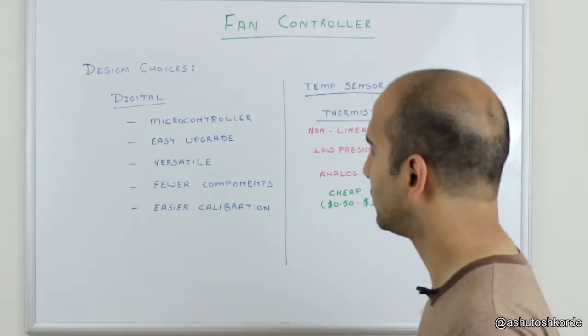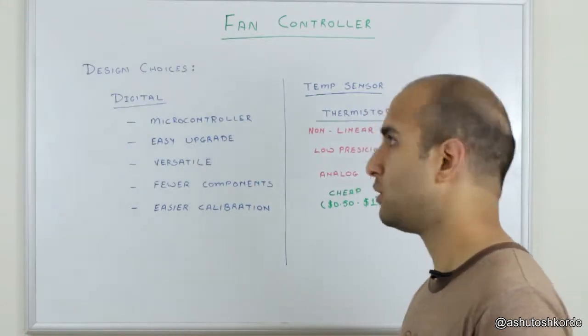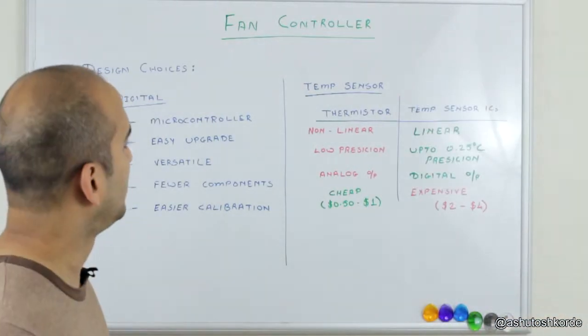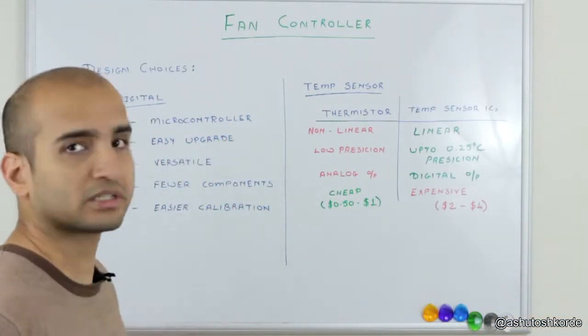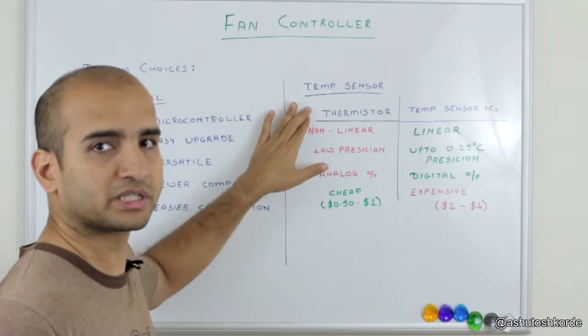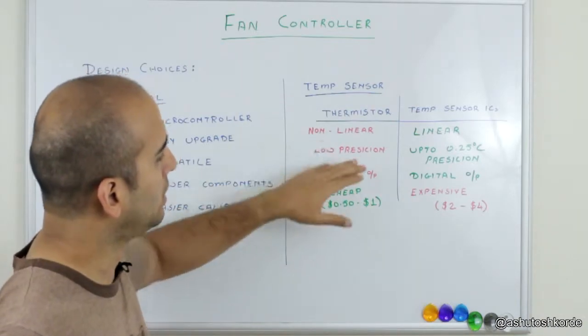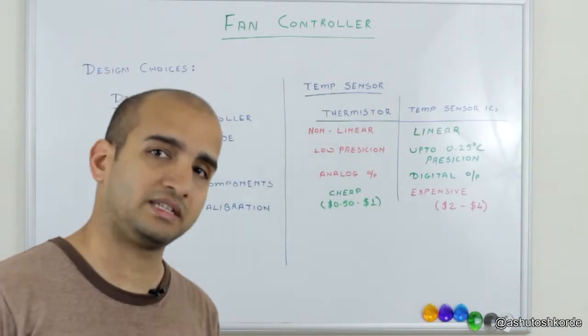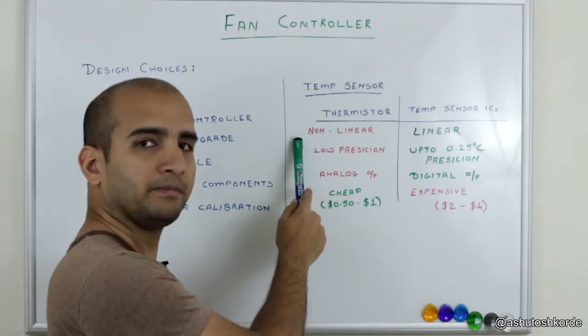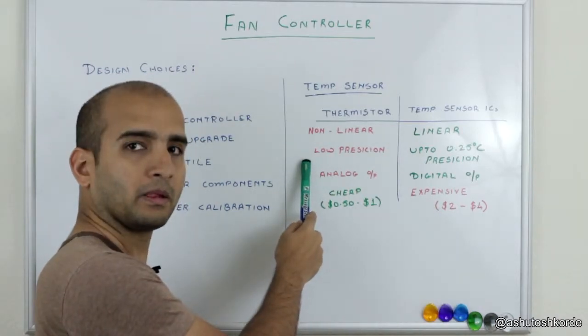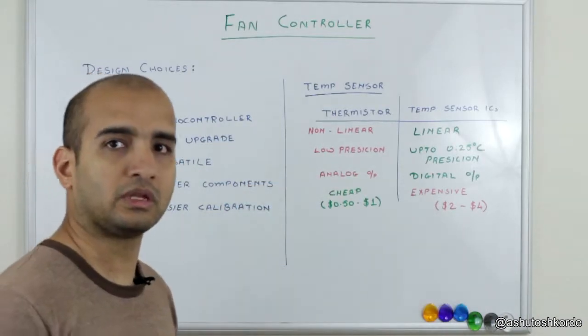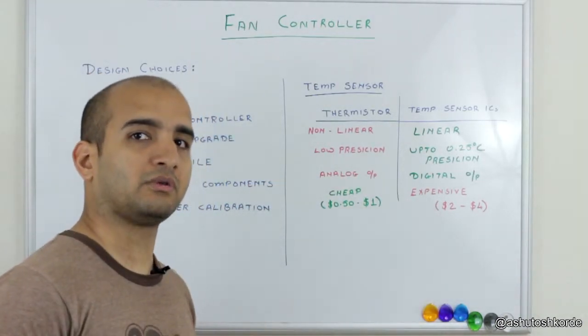We'll decide on what microcontroller to use once we decide on these choices. Similarly we have a choice of what kind of temperature sensor we want to use. One option is we can use a plain old thermistor or we can use a specialized temperature sensing IC. The key thing to note is a thermistor is non-linear. It has inherently low precision because the precision of a thermistor really depends on the analog to digital converter